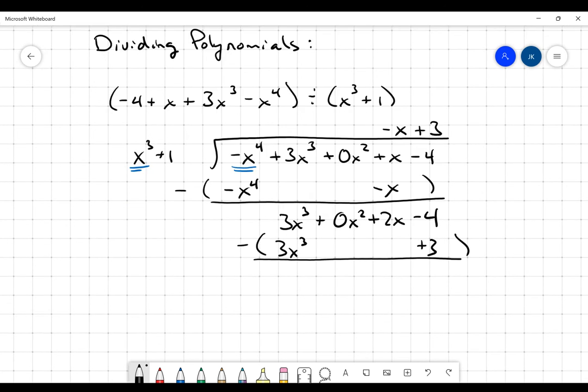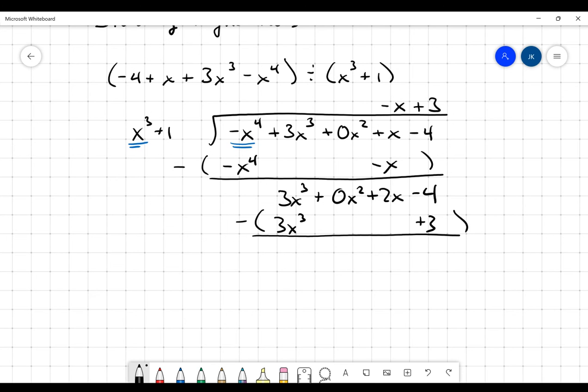And then again, I subtract. My x cubed terms are going to cancel. I'm going to get 0x squared minus nothing, it's just going to be 0x squared. There will be no x squared term. 2x minus nothing is going to be 2x. And negative 4 minus 3 is going to be minus 7.